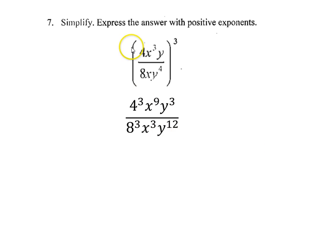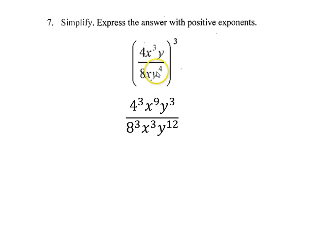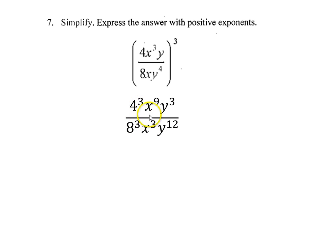When I do that, 4 to the third gives me 4 to the third. When I do x to the third to the third, I get x to the ninth because I multiply these two together since it's a power to another power. y to the third is y to the third. 8 to the third is 8 to the third. x to the third is x to the third. And y to the fourth to the third is y to the twelfth power. So now that I have this expression simplified by evaluating this whole expression on the inside to the third power, giving me this,